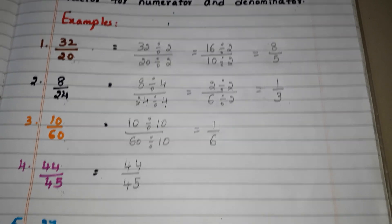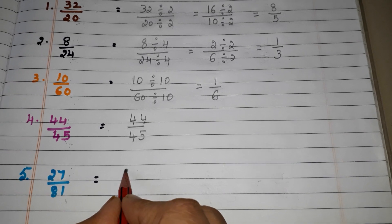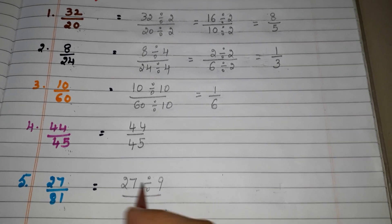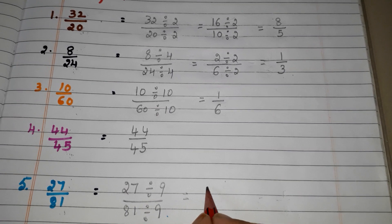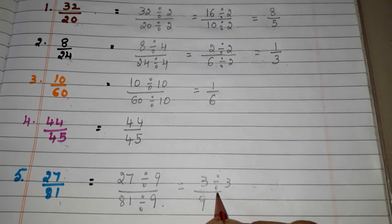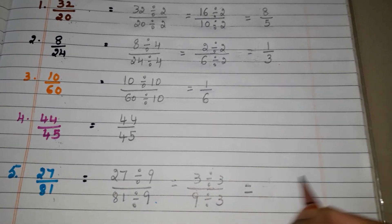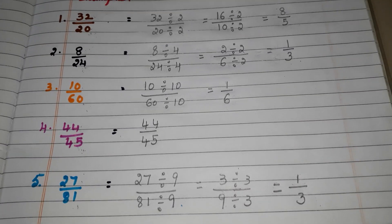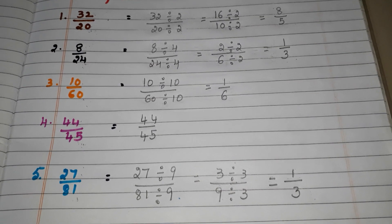Let us go to the last example: 27 by 81. Here we can select the factor 9, because 9 divides 27 as well as 81. Write the quotients here: 3 by 9. Again we can select the factor 3, because 3 divides 3 as well as 3 divides 9. So the answer is 1 by 3. Like this, we have to reduce the fraction to its lowest form. I hope this video is very helpful for you.